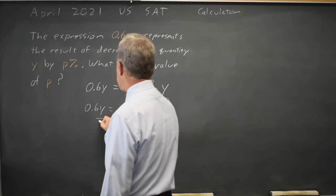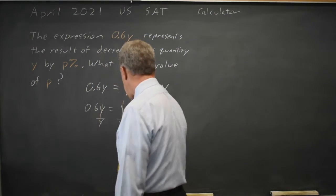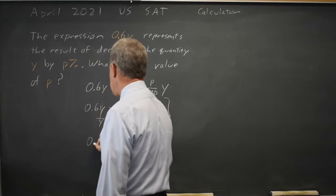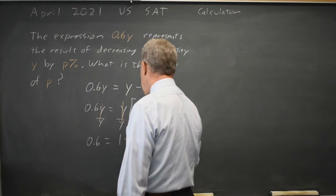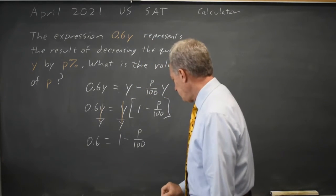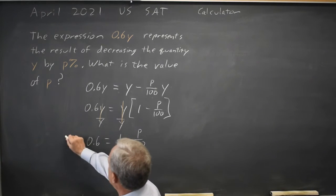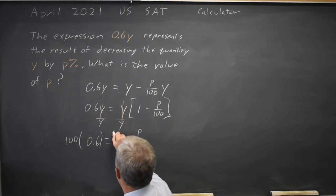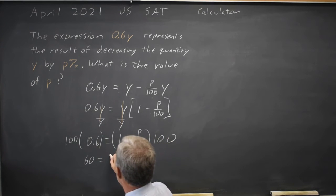If I divide both sides by Y, Y over Y is 1 on both sides. So I get 0.6 equals 1 minus P over 100. If I multiply both sides by 100, I can get rid of the fraction. And I get 60 equals 100 minus P.